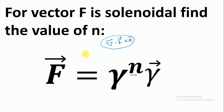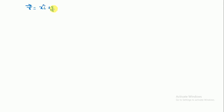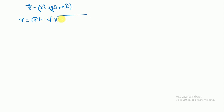In this question, they have asked for the value of n — that is, we will have to calculate n. Let's suppose that r is a three-dimensional vector: vector r equals x î plus y ĵ plus z k̂. If vector r is this, then the magnitude of r, written as |r| or r, equals √(x² + y² + z²). Given in the problem, vector F equals r to the power n into vector r.